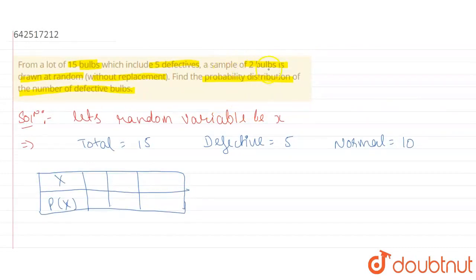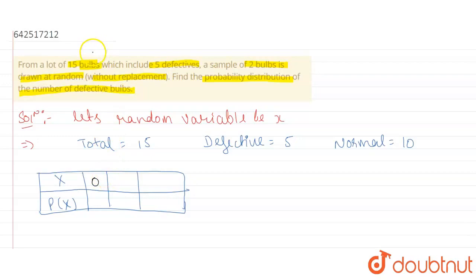In the question, it is given that a sample of 2 bulbs is drawn at random without replacement. So we can only select 2 bulbs. There can be 0 defective bulbs — meaning both selected bulbs are non-defective or normal. There is also a chance that 1 bulb is defective and 1 is normal. And there is a chance that both bulbs are defective. So X can take values 0, 1, or 2.